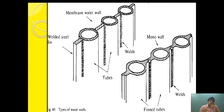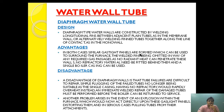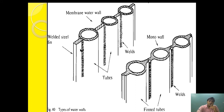In diaphragm type wall tubes, no refractory material is used. Gas-tight panels are formed which surround the furnace, and since no radiant heat can penetrate this wall, no refractory material needs to be fitted behind them, and a single boiler casing can be used. The membrane wall tube or monowall design has the advantage that it doesn't require any refractory lining after it, unlike the tangential and stub pipe types.